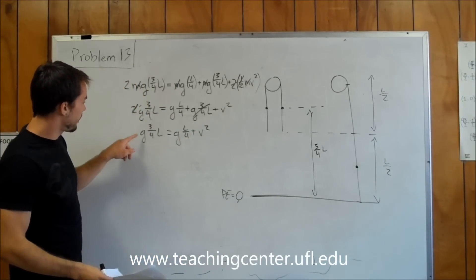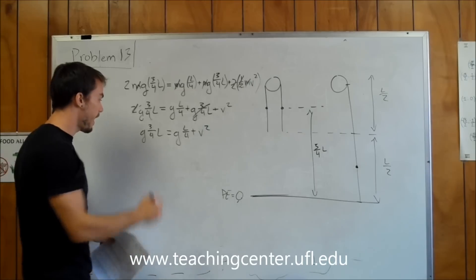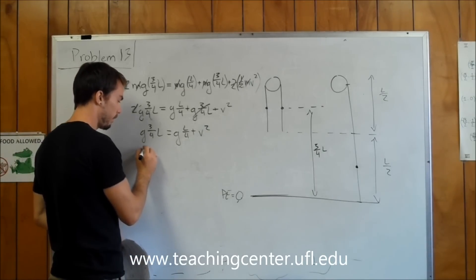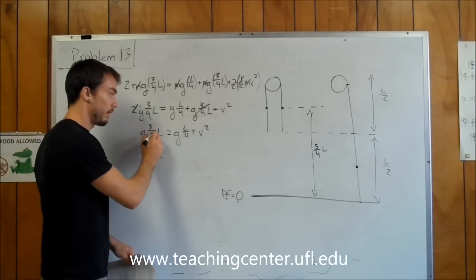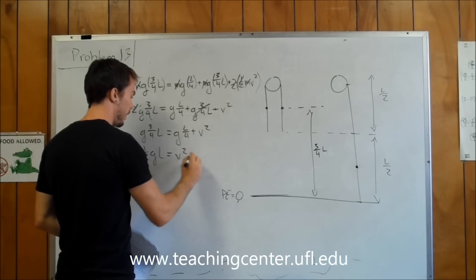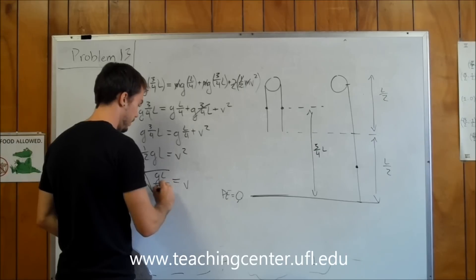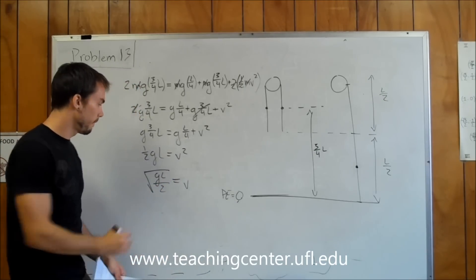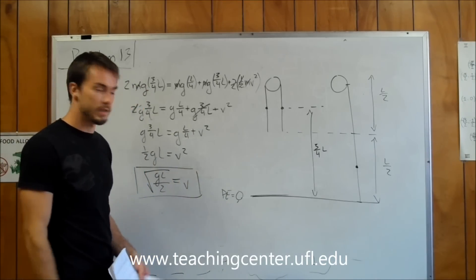Then we can say that g times 3/4 of L, we can subtract g times L over 4 from that and end up with basically 1/2 g times L over 2. 3/4 of L minus 1/4 of L, all times g, is going to be equal to v squared. Or v is just going to be equal to the square root of gL over 2. And this is going to be our correct answer for this question.